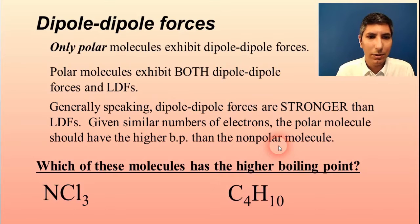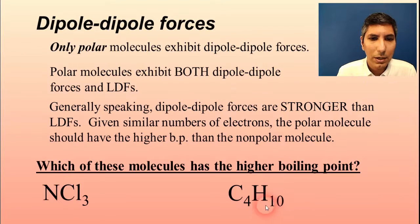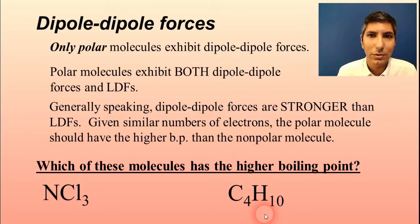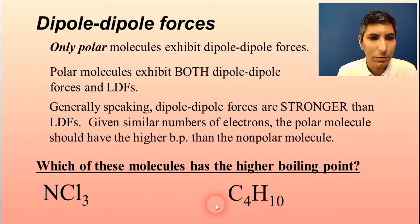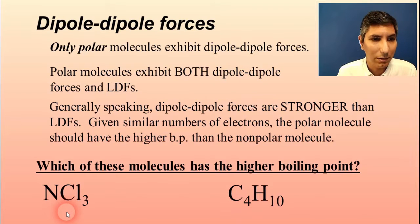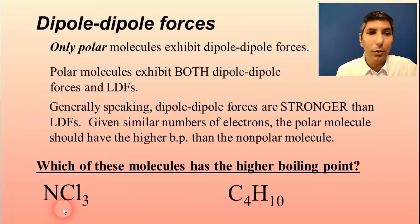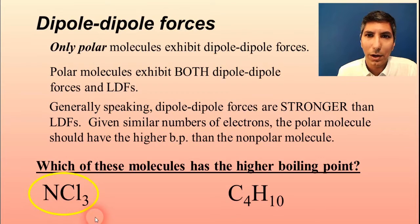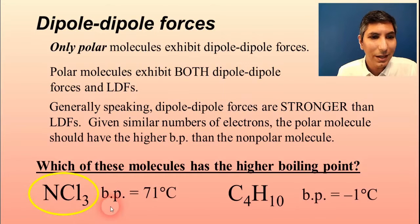So which of these molecules has the higher boiling point? The butane molecule is a nonpolar structure — most organic hydrocarbons with just C and H are nonpolar — so that's just London dispersion forces. But if you draw out nitrogen trichloride, you'll see it's a polar molecule, so it has LDFs but also dipole-dipole forces. We're going to say nitrogen trichloride has the higher boiling point, and this is confirmed by looking it up in the chemical literature — its boiling point is a whole lot higher than butane's.